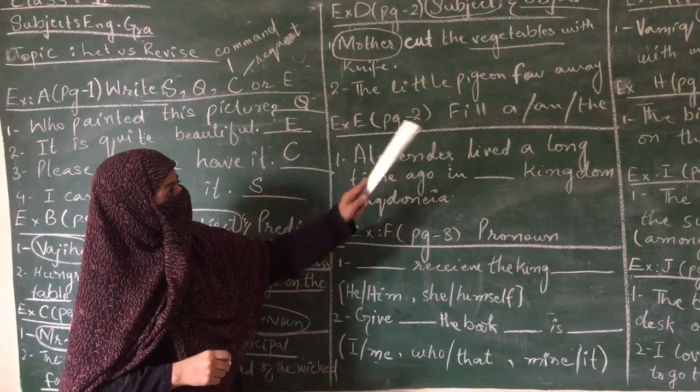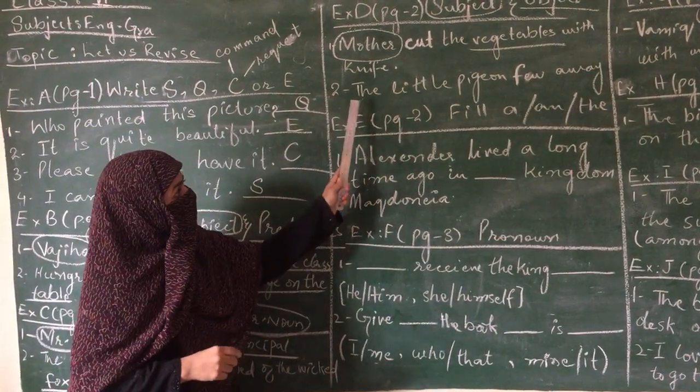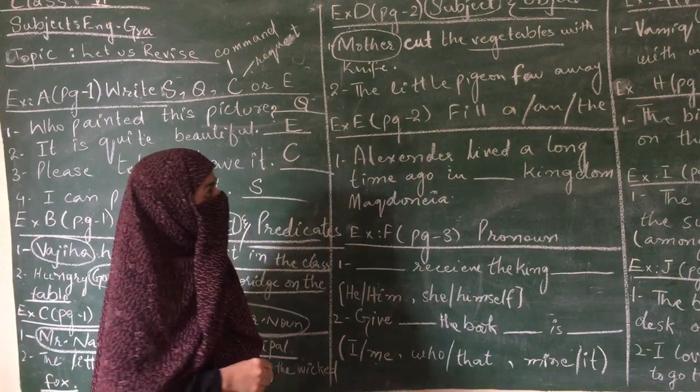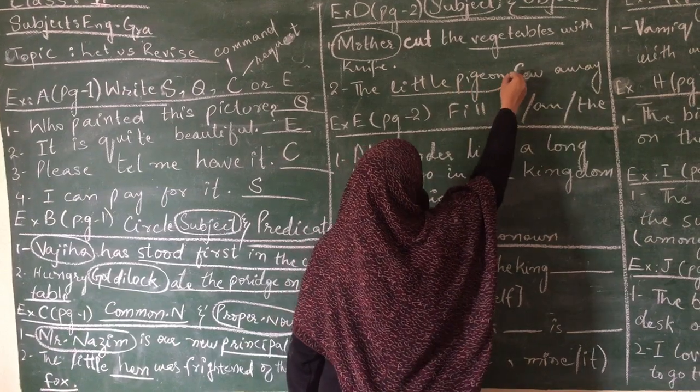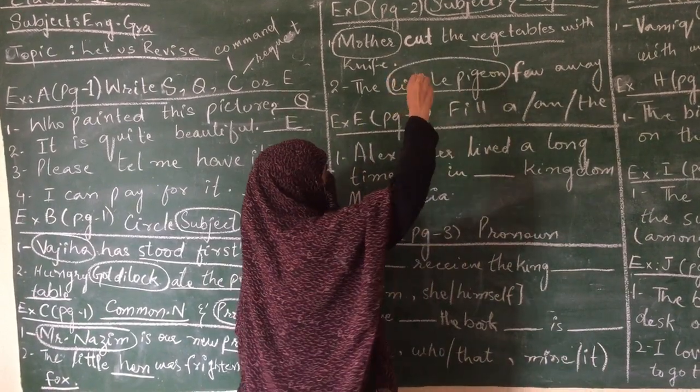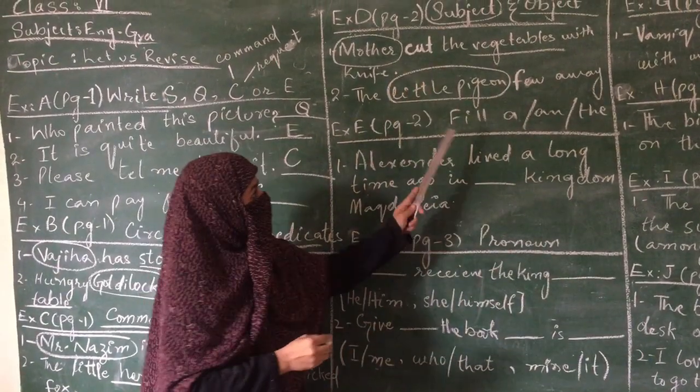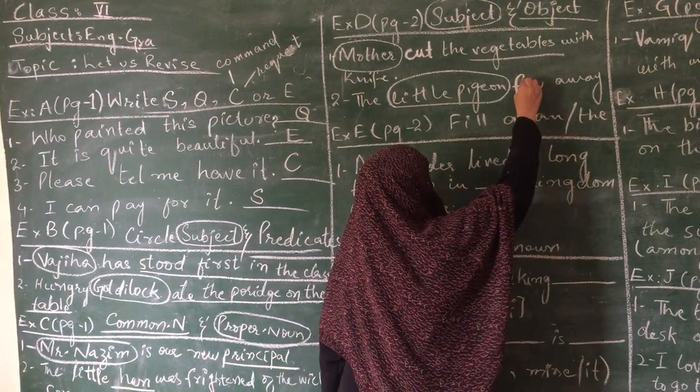The little pigeon flew away. The little pigeon flew away. Here we are talking about pigeon, little pigeon. Our subject is little pigeon. We circle it. What did it do? It flew away.